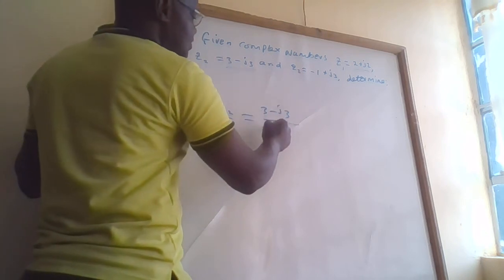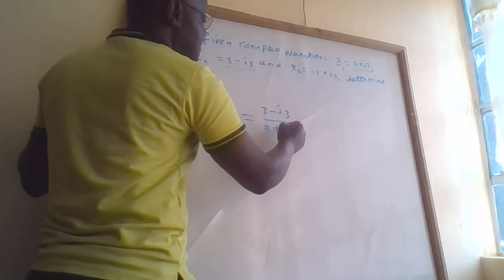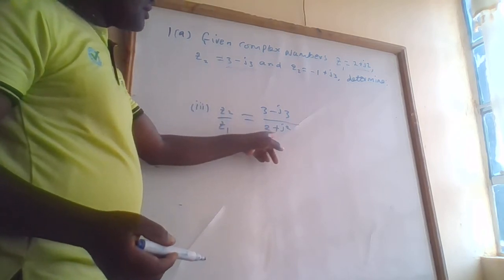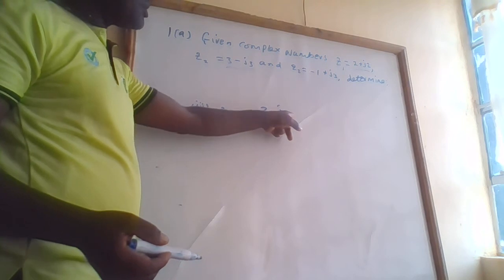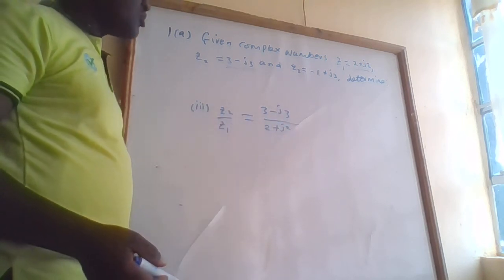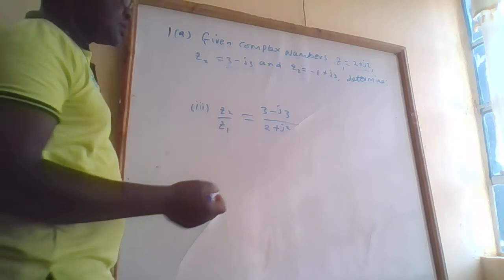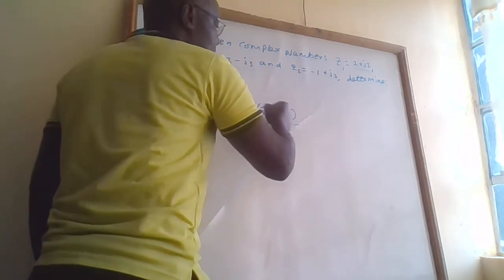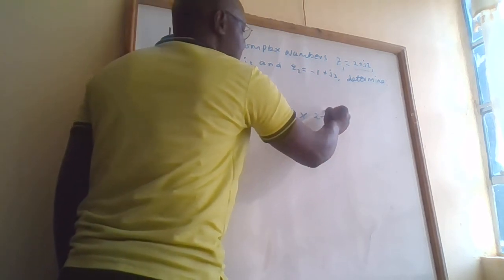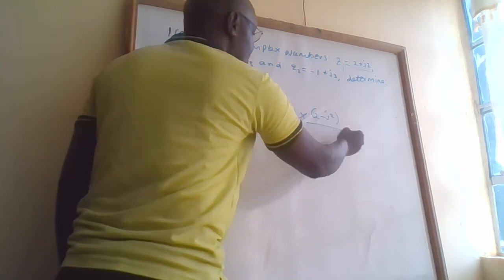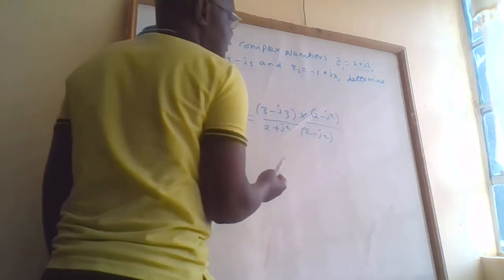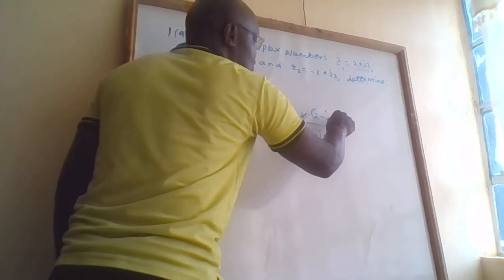For Roman III, Z2 divided by Z1 equals (3 minus j3) over (2 plus j2). We shall multiply numerator and denominator by the conjugate of the denominator, which is 2 minus j2.